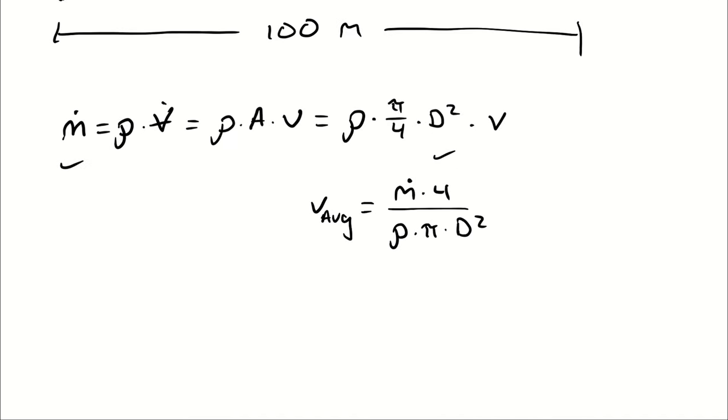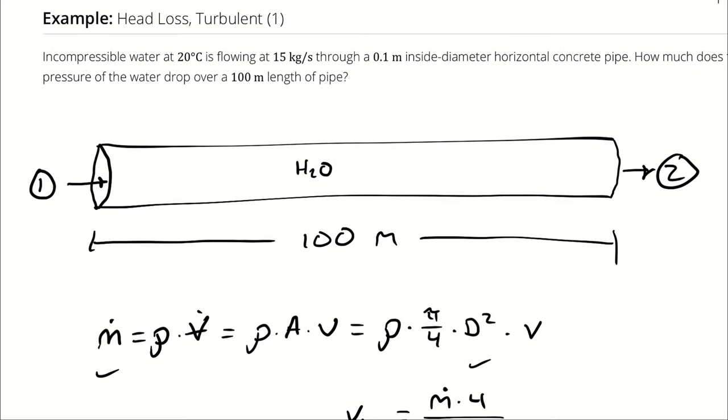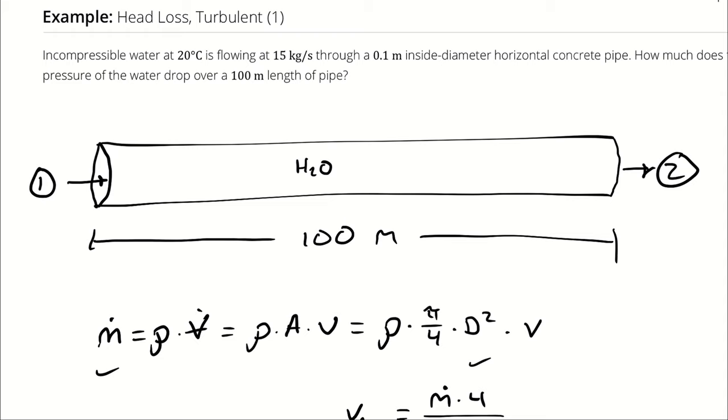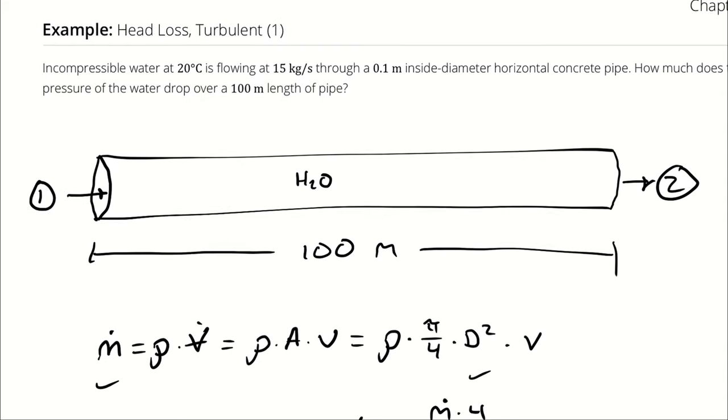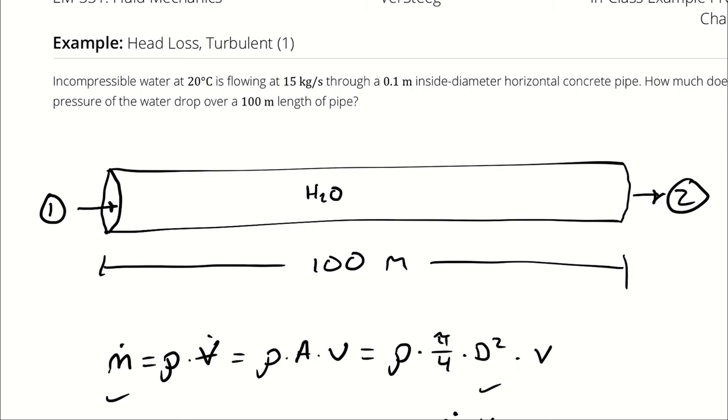Now I know what you're thinking - why does the Reynolds number have anything to do with this? Well, when we're calculating the head loss across our pipe, we have to use either the laminar equation or the turbulent equation. Which equation we plug in is based on what our Reynolds number is. Since we have internal flow through a pipe, we have to compare our Reynolds number to 2300.